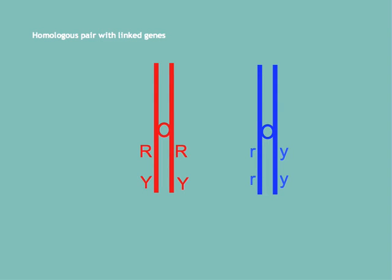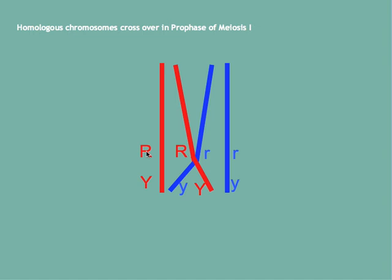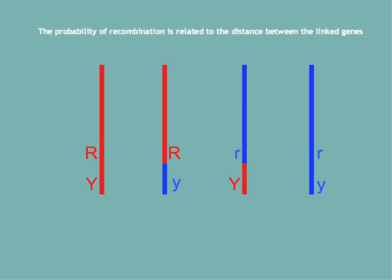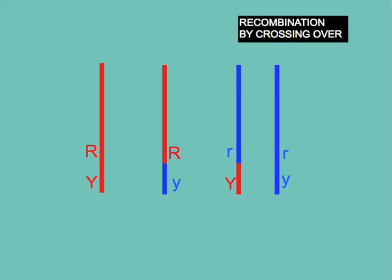But the geneticist Thomas Hunt Morgan, in working with fruit flies in the early 20th century, was able to discover that sometimes genes can be linked or located very close by on chromosomes. And when this happens, the only chance of them separating and forming recombinants would be if crossing over happened at just the right point in prophase I of meiosis. Such mixing or recombination would be dependent upon a crossover point or a chiasma forming between the two linked genes, resulting in genetic recombination by crossing over.